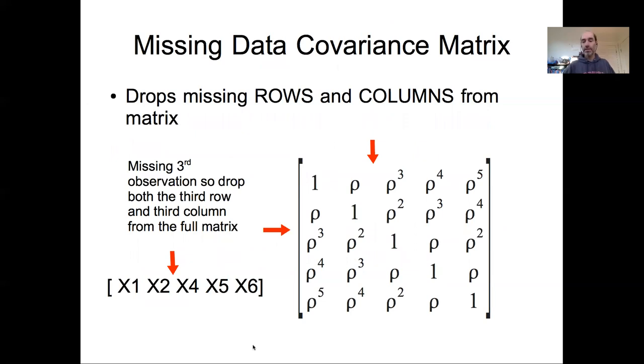One other important generalization of repeated measures data, or autocorrelated models more generally, is the need to be able to deal with missing data when you're describing that covariance. So here we see an example where we have a data set at X at time point 1, 2, 4, 5, and 6, where we're missing the third row of data. So when we're missing the third row of data, we would essentially construct the full covariance matrix and then drop both the third row and the third column, keeping us with a square covariance matrix. So when we have missing data, we need to drop the row and column from that covariance matrix.